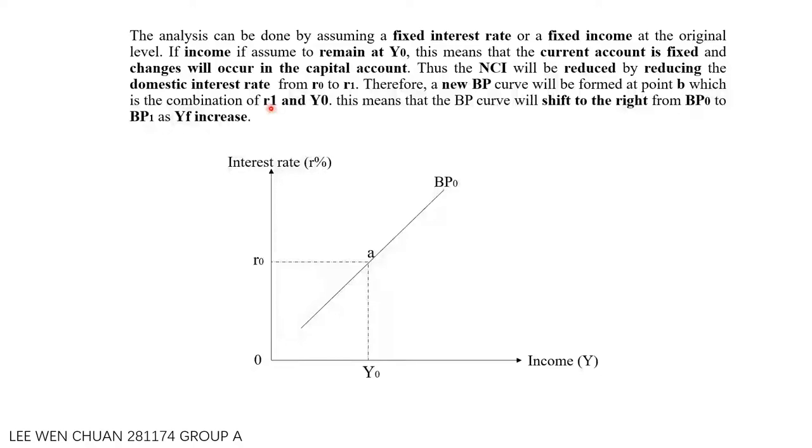Therefore, adjustment needs to be made to achieve equilibrium. The analysis can be done by assuming a fixed interest rate or a fixed income at the original level. If income is assumed to remain at Y0, this means that the current account is fixed and changes will occur in the capital account.